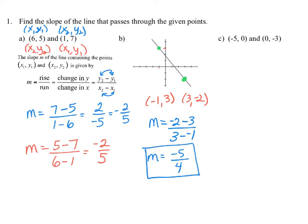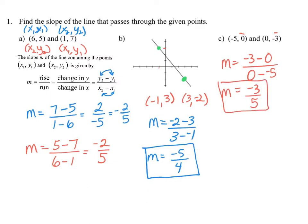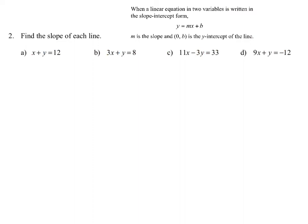For part c, using the slope formula with y₂ minus y₁ in the numerator and x₂ minus x₁ in the denominator, simplifying the numerator gives negative 3, and the denominator gives 5. So the slope for part c is negative 3 fifths.